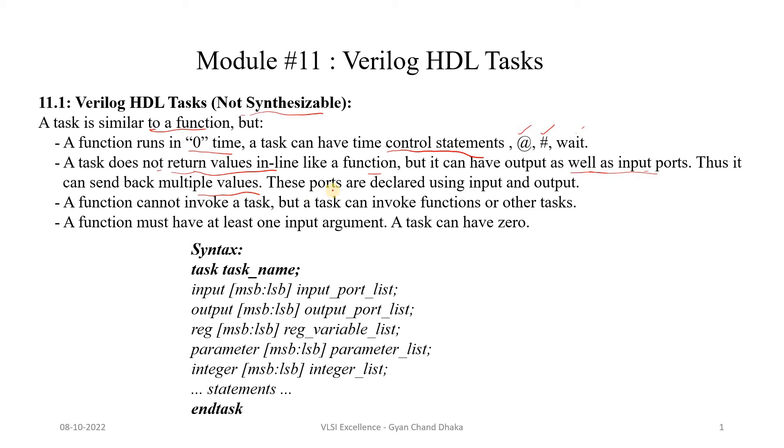These ports we can declare using input and output. A function cannot invoke a task, but a task can invoke functions or other tasks as well. A function must have at least one input argument. A task can have zero input arguments. Now let's see the syntax of a task.